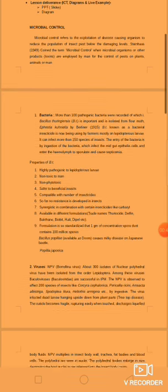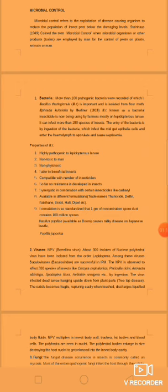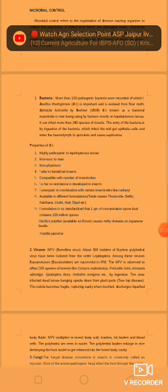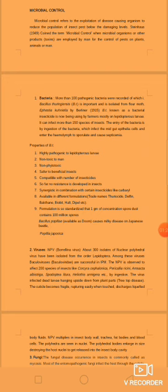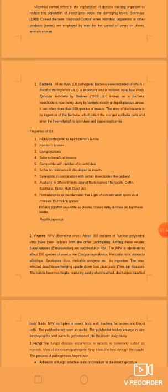First, Bacteria. More than 100 pathogenic bacteria were recorded, of which Bacillus thuringiensis is important and was isolated from flour moth by Berliner, 1915. Bt, known as a bacterial insecticide, is being used by farmers mostly on Lepidopteran larvae. It can affect more than 150 species of insects. The entry of the bacteria is by ingestion.